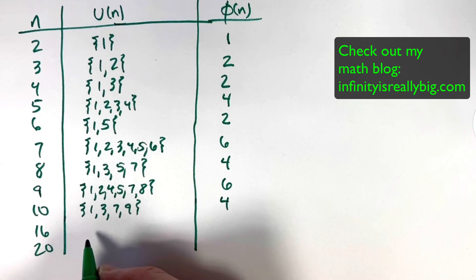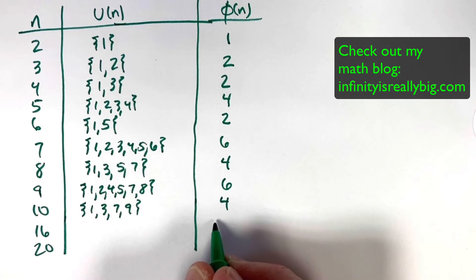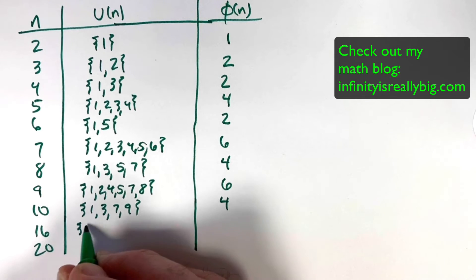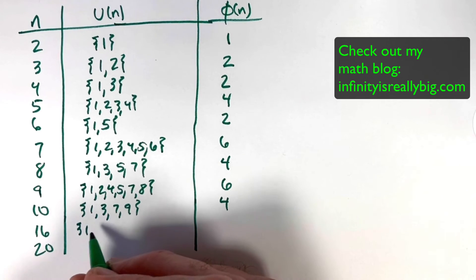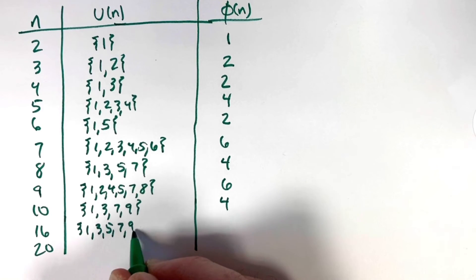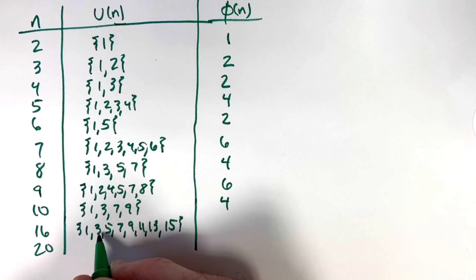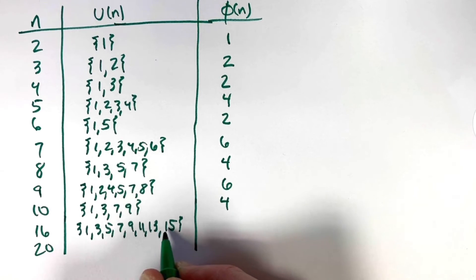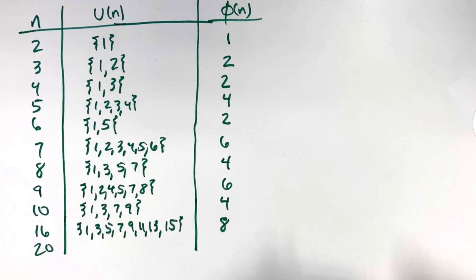For n = 16, did you guess the answer ahead of time? It should be 8, right, based on the pattern? Avoiding even numbers, we get 1, 3, 5, 7, 9, 11, 13, and 15. That's 8 such numbers, so φ(16) = 8.